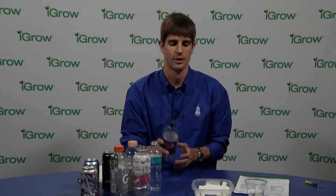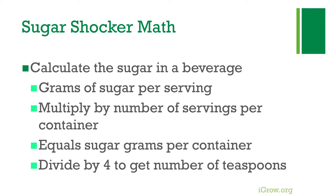You want each group to go through one beverage at a time. For example, if they are going to use the Pepsi container, there are multiple servings in this container. The students will calculate how many grams of sugar are in the entire container. For this container, there are 28 grams in a serving, but there are two and a half servings per container. Therefore, there are 69 grams of sugar for the entire container. Instruct the students that they need to divide the total amount of grams of sugar by four to represent how many teaspoons are in that beverage.